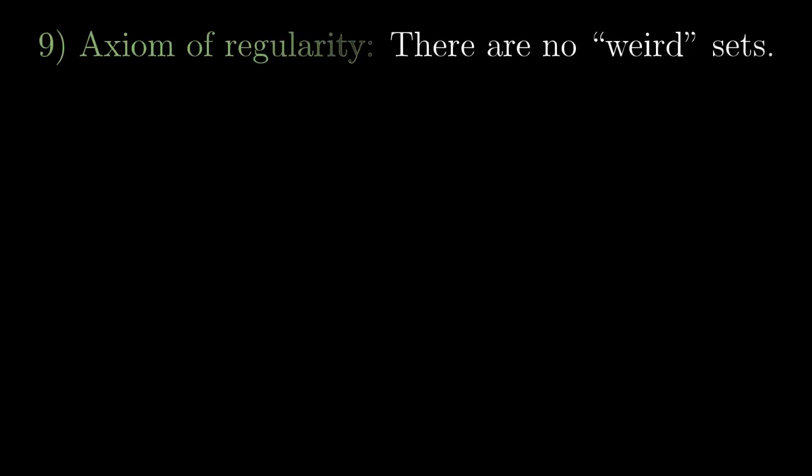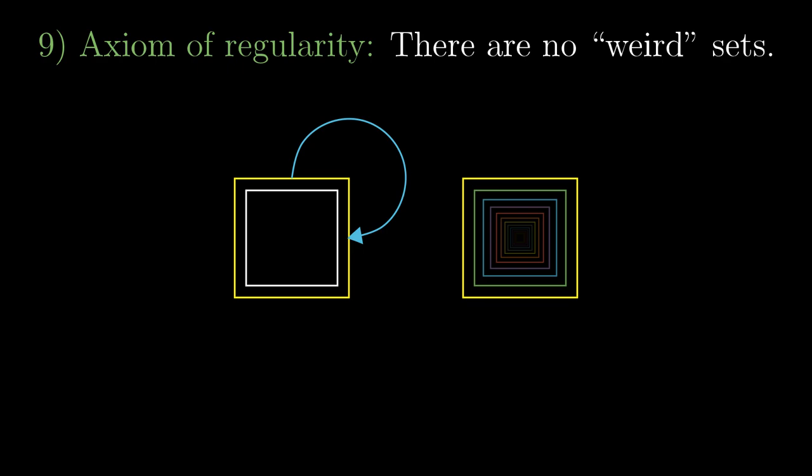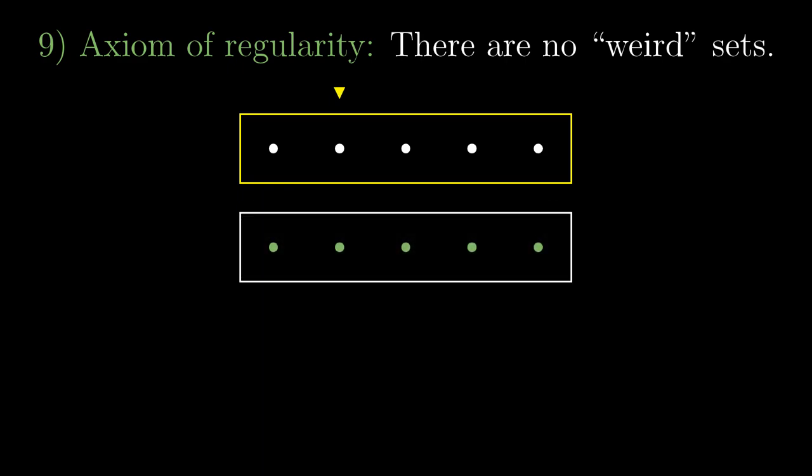And the last axiom, the axiom of regularity or also the axiom of foundation, is listed here rather for completeness. It states that it cannot happen that the set would contain itself or there would be a set containing a set containing a set and this would continue forever. But of course this vague intuition is not exactly what the axiom states. Its formal statement is as follows. Whenever we have a non-empty set, at least one of its elements is, as a set, disjoint with the original set. They have no element in common.